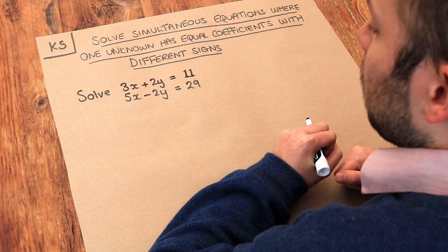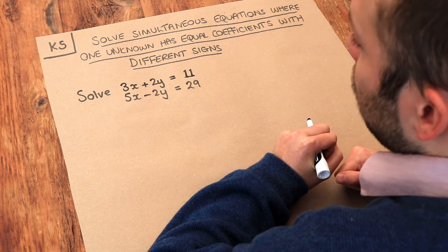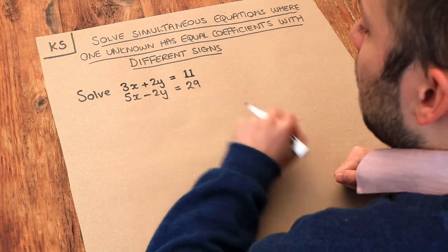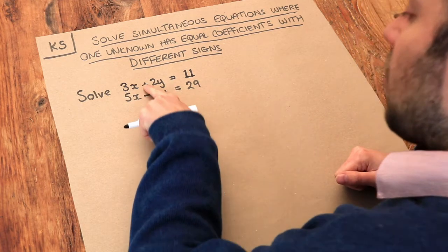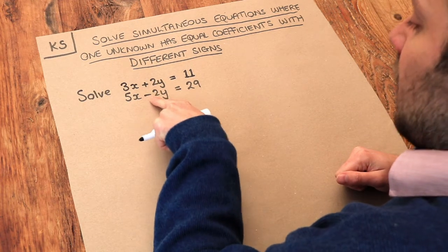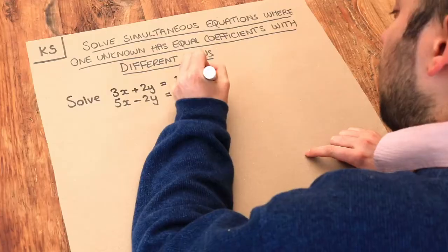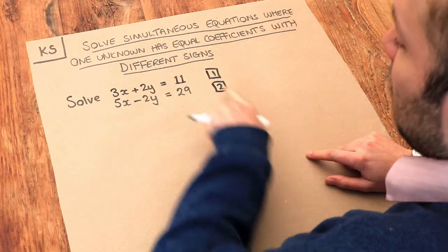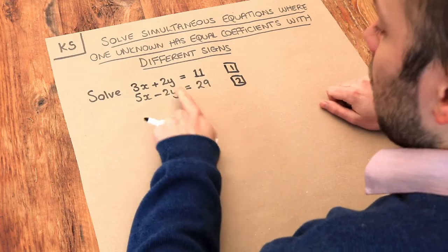Now in the previous video we saw that we could subtract the two equations to make either the x or the y disappear. But this time, because these signs are different, if we were to subtract these two equations, I'm just going to number them 1 and 2, if we were to subtract them,